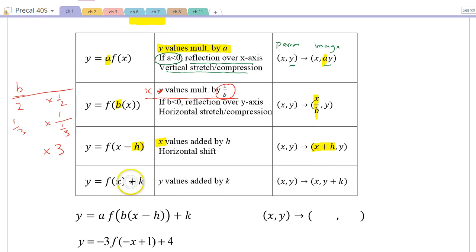Our last one is our k values. This is outside the function, so it affects y. And it's straight ahead. The y values are added by k. So here you see it when we map it.